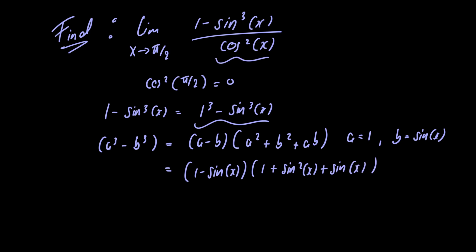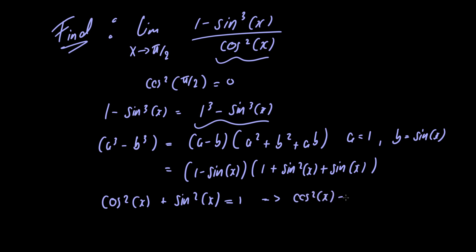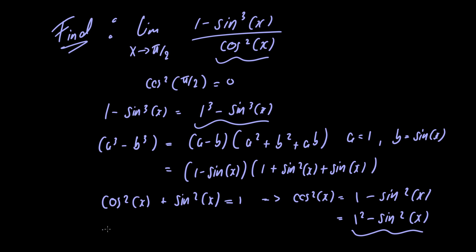Notice that we can rewrite cosine squared of x using the Pythagorean identity: cosine squared of x plus sine squared of x equals 1, which tells us cosine squared of x equals 1 minus sine squared of x. We can rewrite this as 1 squared minus sine squared of x and factor it using the difference of squares formula: a squared minus b squared equals a minus b multiplied by a plus b.